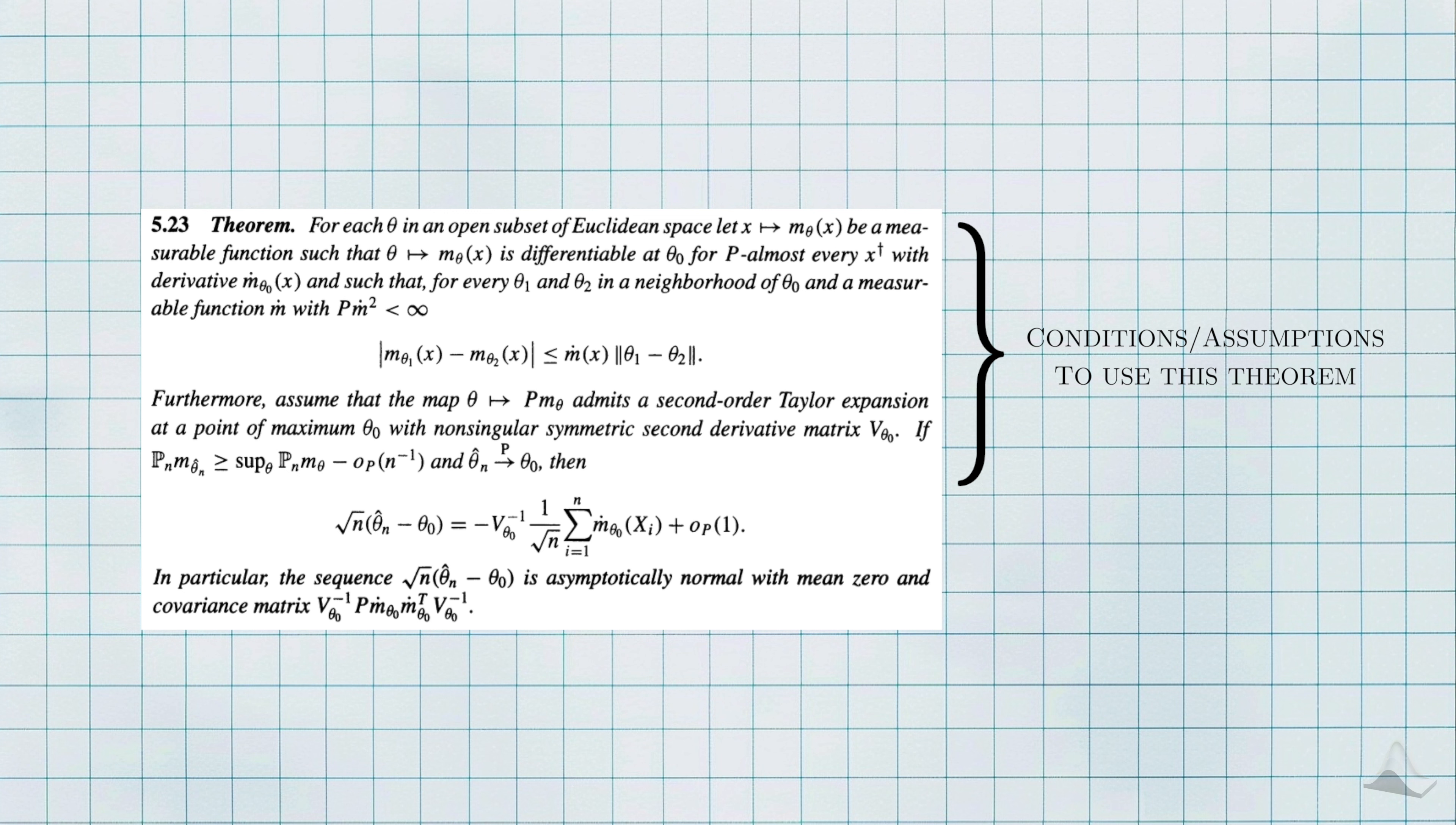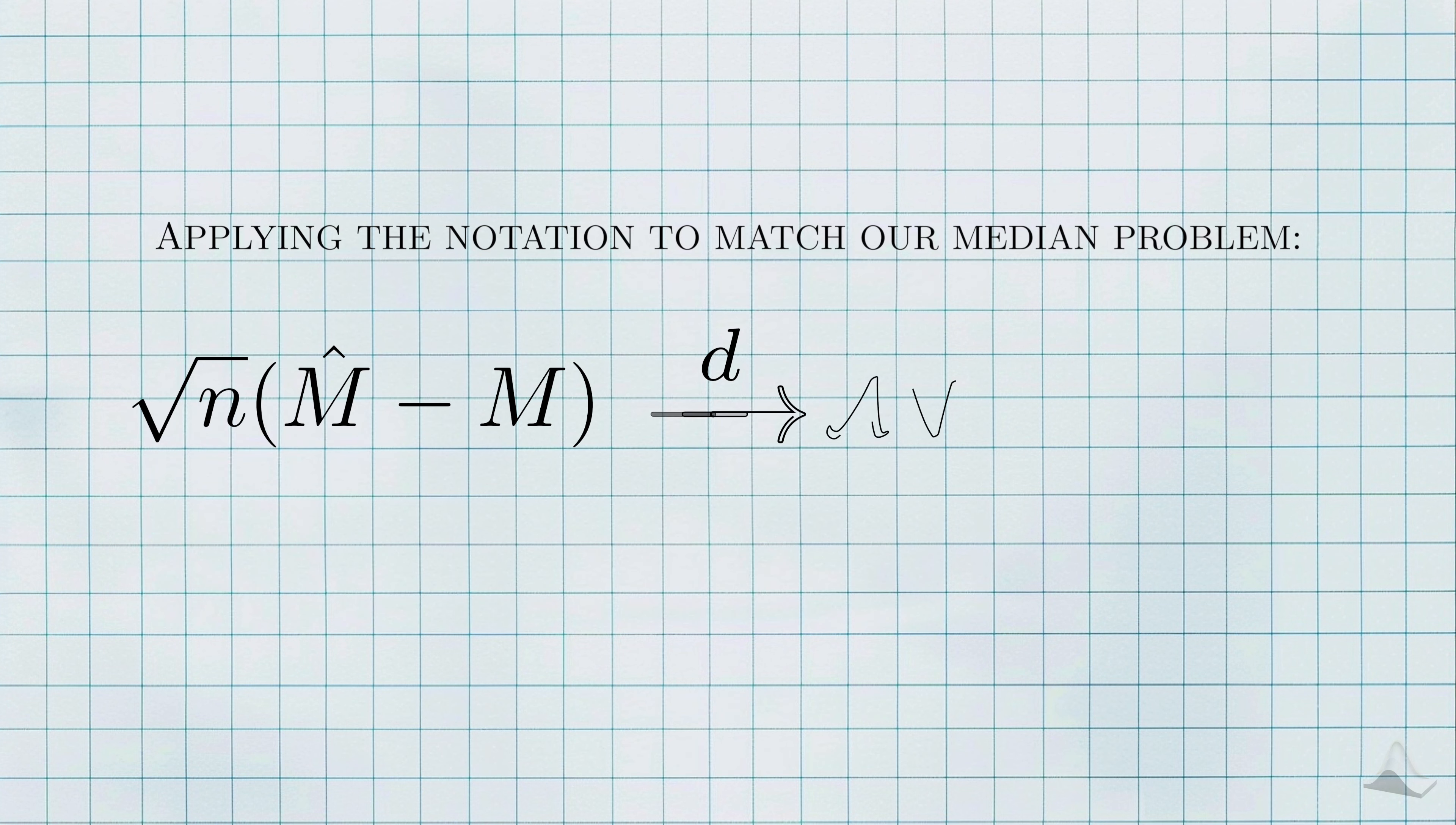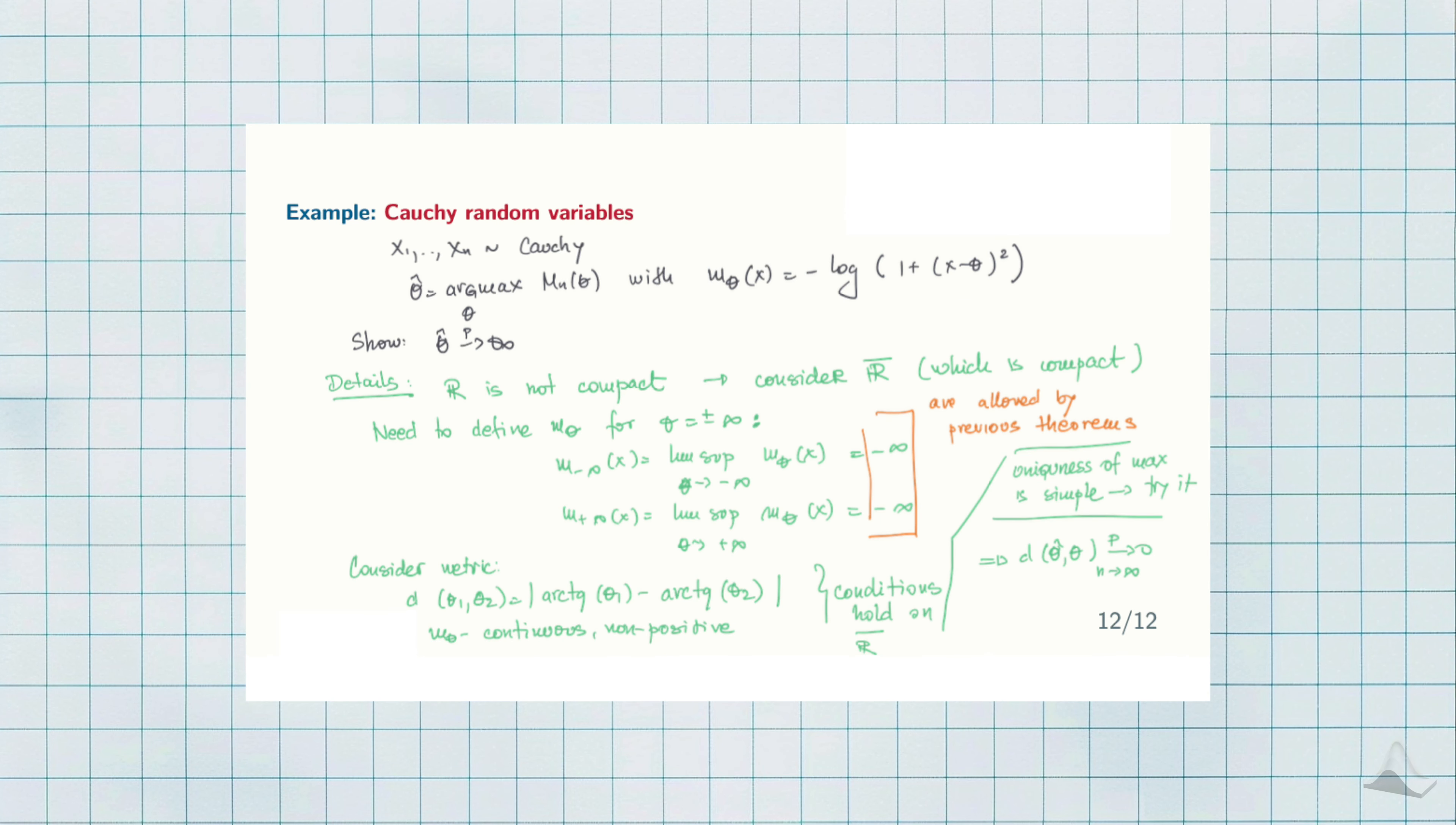Without going into the gritty details, if you can confirm or assume that the m function and the estimator has these certain properties, then this particular expression on the left side can be approximated by the expression on the right. And sometimes the results of the theorem are just as hard to understand as the conditions. The actual useful result of this expression is this. That this expression here is asymptotically normally distributed with mean zero and variance equal to this expression.